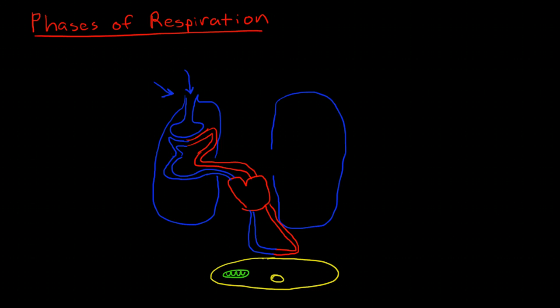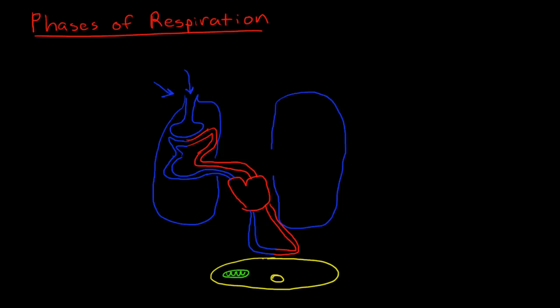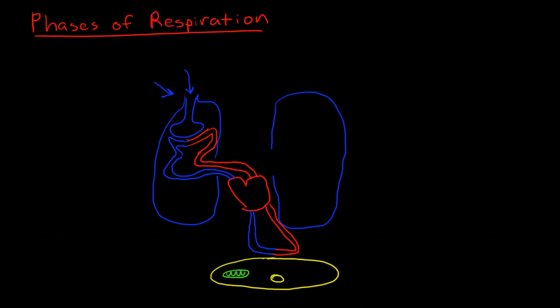It crosses the alveolar capillary membrane into the bloodstream and then travels through the bloodstream down to cells and feeds the cells with oxygen. Then deoxygenated blood comes back to the heart and moves back to the lungs, and I'm going to talk about each phase here.